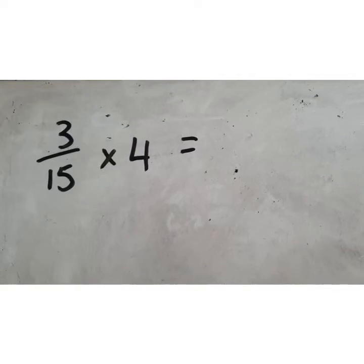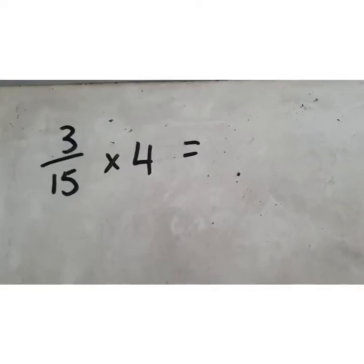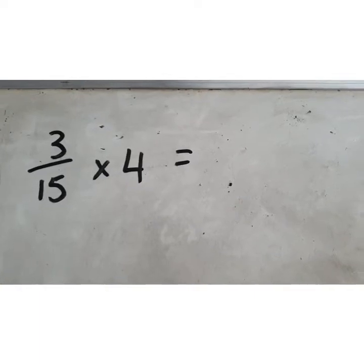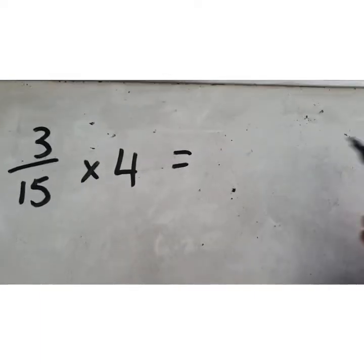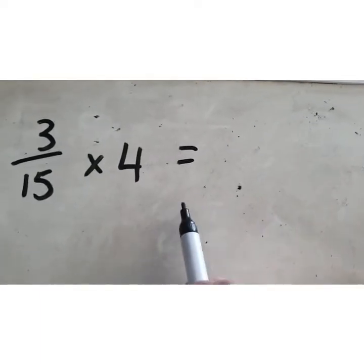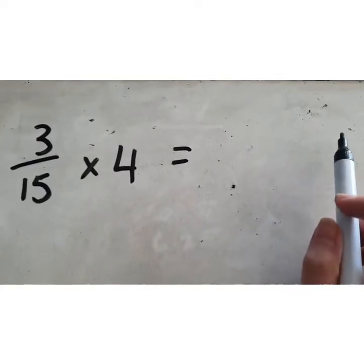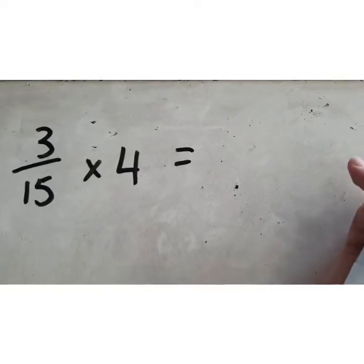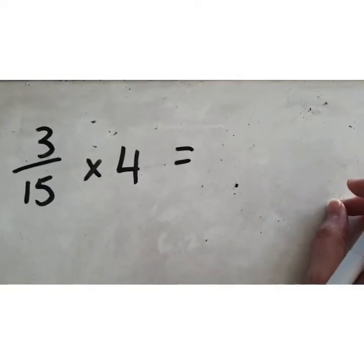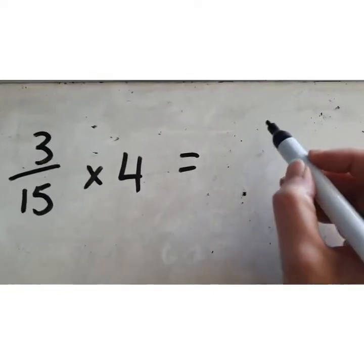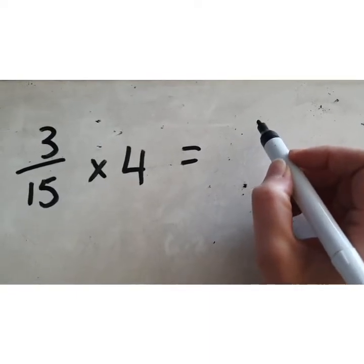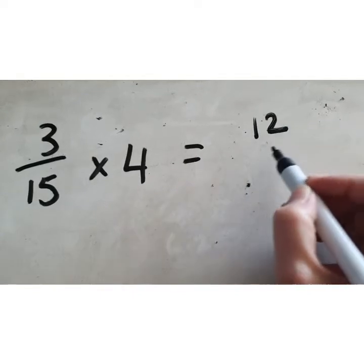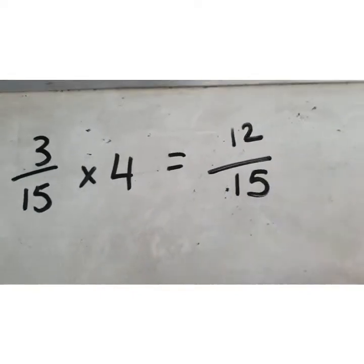Your next question was: what is 3/15 multiplied by four? This was shown in an image using circles — four circles because that's our integer, each with 15 segments and three shaded in. The question was how many fifteenths were shaded in. Shout it out — the answer was 12 fifteenths.